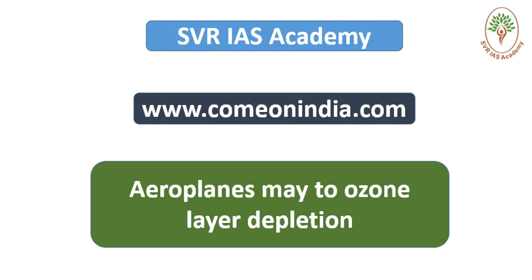In this video lecture we are going to explain one important environmental current affairs topic: aeroplanes are affecting the ozone layer and monsoon. How?